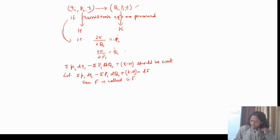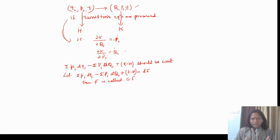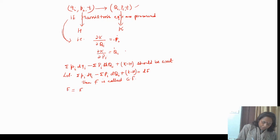The generating function is basically a function of 4n+1 variables, but because of the relations between old and new coordinates — which are 2n each — the generating function becomes a function of 2n+1 variables: 1 time variable and 2n other variables, n corresponding to generalized coordinates and n corresponding to generalized momentum. Now, this F may be a function of some new coordinates and some old coordinates. We assumed F as a function of qi, Qi, and time. In my previous lecture, I assumed this form and called it F1.